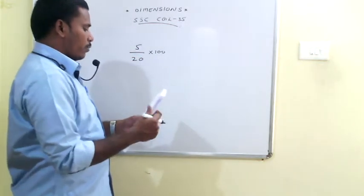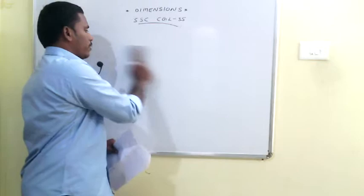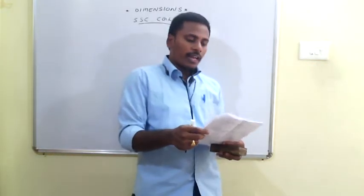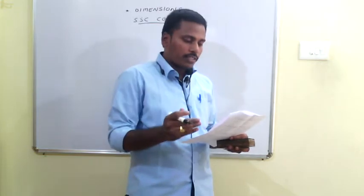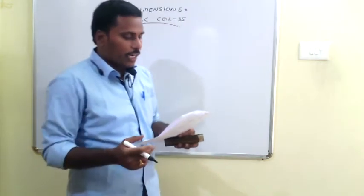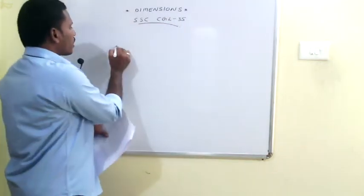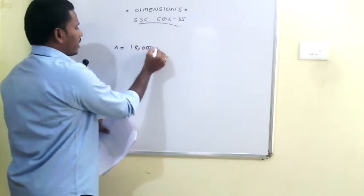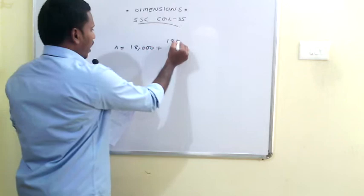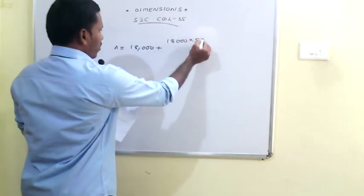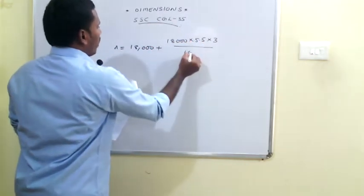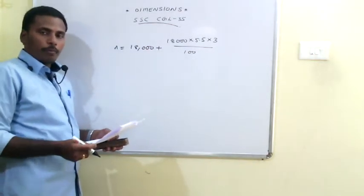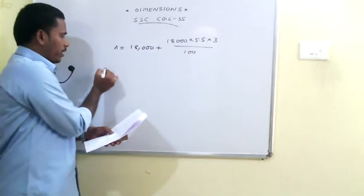The 56th problem: find the amount to be paid back on a loan of 18,000 at 5.5% per annum for three years. The amount paid back is principal plus interest: 18,000 + (18,000 × 5.5 × 3)/100. If you simplify directly you get the amount to pay back. This is a direct question from simple interest.